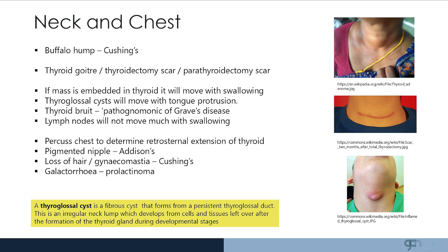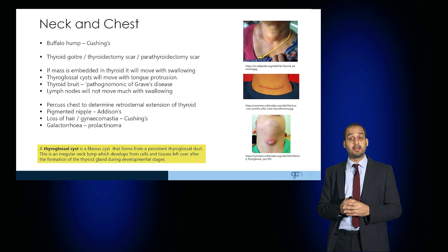This patient has a large goiter. The second image demonstrates a collar incision which is relatively recent and so more apparent. The third image demonstrates a thyroglossal cyst.